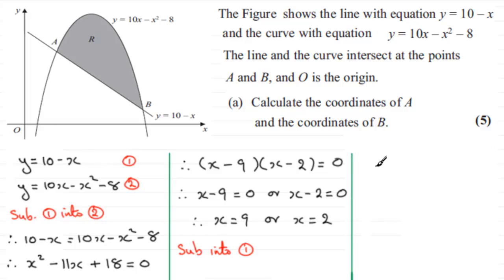We can see that when x equals 9, what's the corresponding y value? Well, it's going to be 10 minus 9, which is going to be 1. And similarly, when x equals 2, y is going to equal 10 take away 2, which is 8.